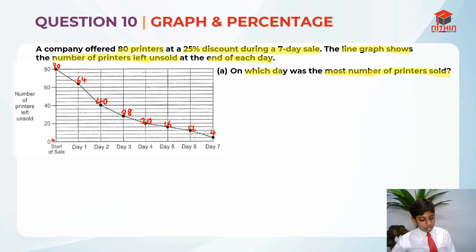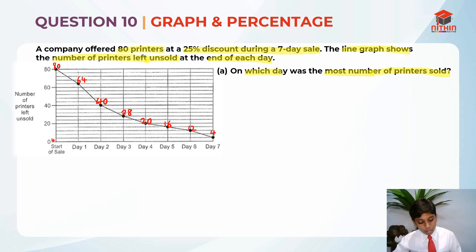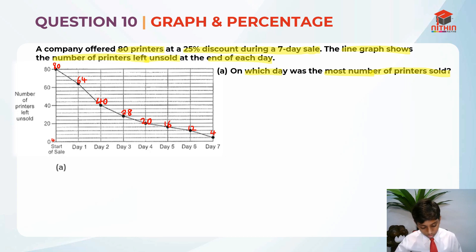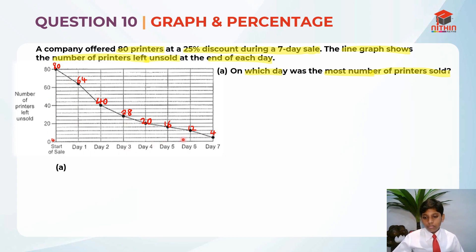So the graph shows: start of sale is 80, then on day 1 there are 64 left, day 2 there are 40 left, day 3 there are 28 left, day 4 there are 20 left, day 5 there are 16 left, day 6 there are 12 left, and day 7 there are 4 left.